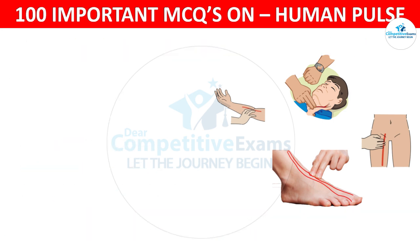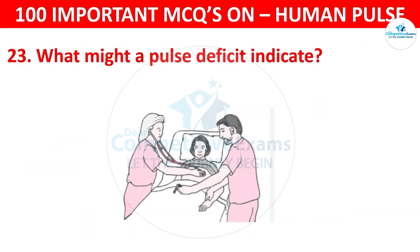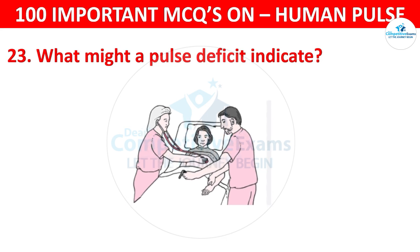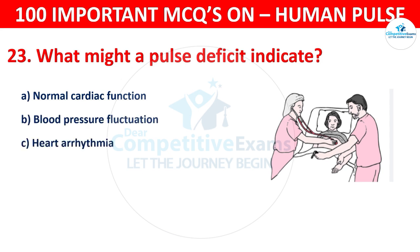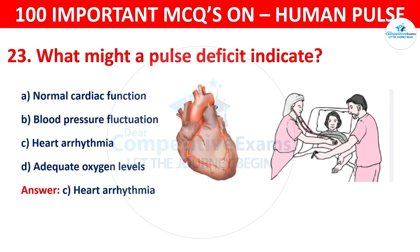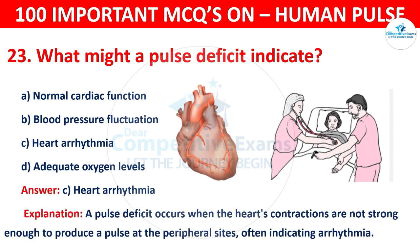Question number 23: What might a pulse deficit indicate? Your options are: Normal cardiac function, Blood pressure fluctuation, Heart arrhythmia, or Adequate oxygen levels. The correct answer is C, that is heart arrhythmia. A pulse deficit occurs when the heart's contractions are not strong enough to produce a pulse at the peripheral sites, often indicating arrhythmia.